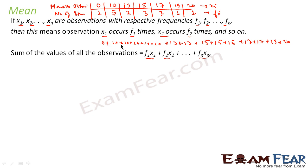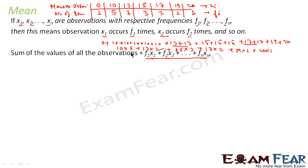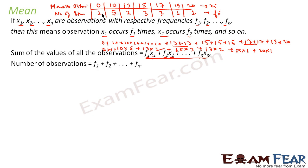This same thing can be written as: 10×5 + 13×2 + 15×3 + 17×2 + 19×1 + 20×1 + 0×1, which is exactly f1·x1 + f2·x2 + f3·x3, and so on. So x1 is 0, f1 is 1; x2 is 10, f2 is 5. This way, the sum of all observations is f1·x1 + f2·x2 + f3·x3 + ... + fn·xn.